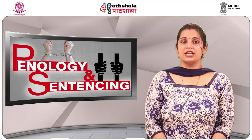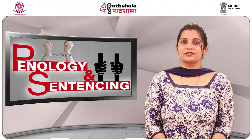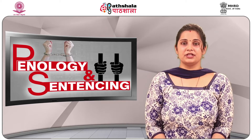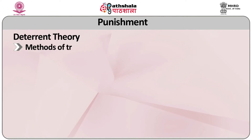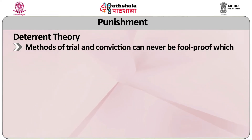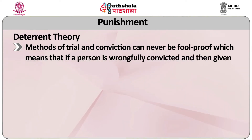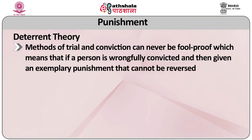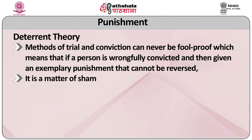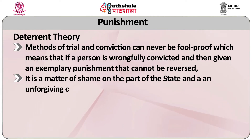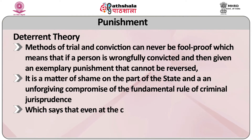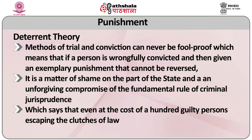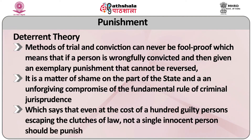What works against deterrence further is that current methods of crime control are not effective in nabbing criminals, leaving sufficient scope for them to escape penalties. Apart from that, methods of trial and conviction can never be foolproof — if a person is wrongfully convicted and given an exemplary punishment, that cannot be reversed. It is a matter of shame on the part of the state and an unforgiving compromise of the fundamental rule of criminal jurisprudence, which says that even at the cost of a hundred guilty persons escaping, not a single innocent person should be punished.